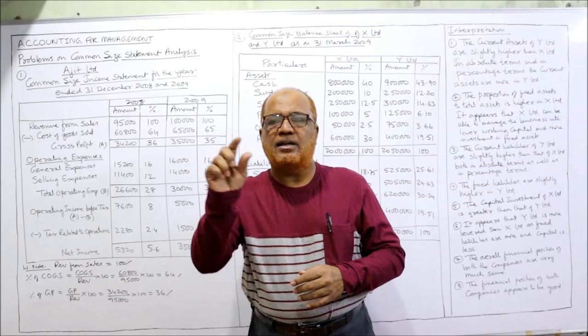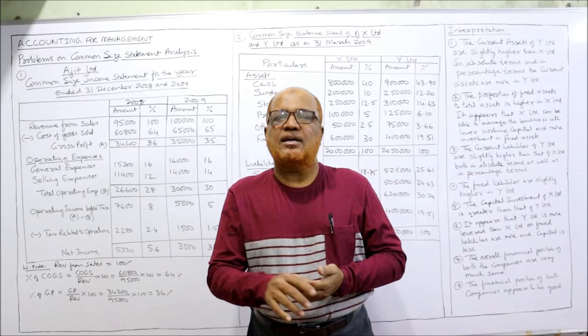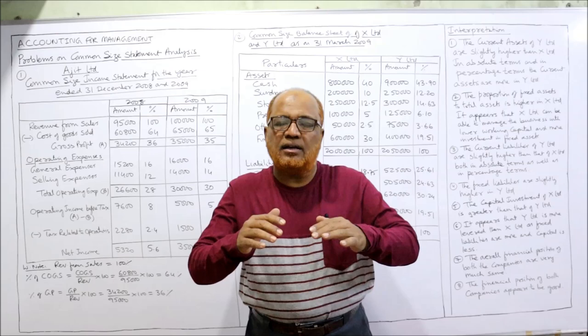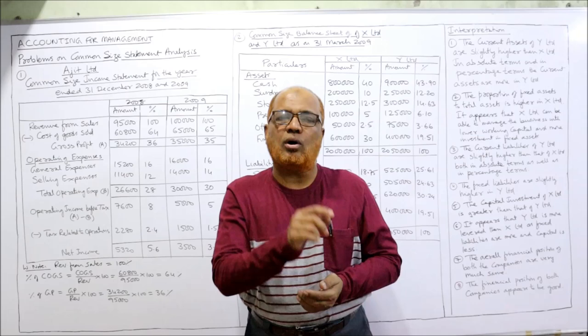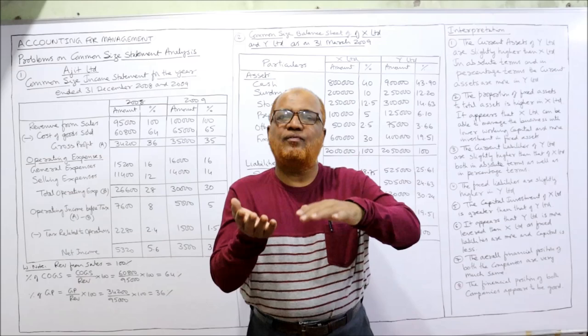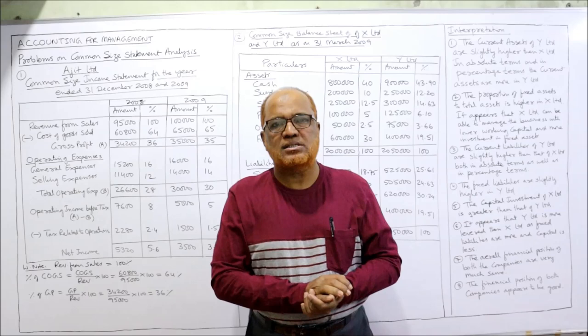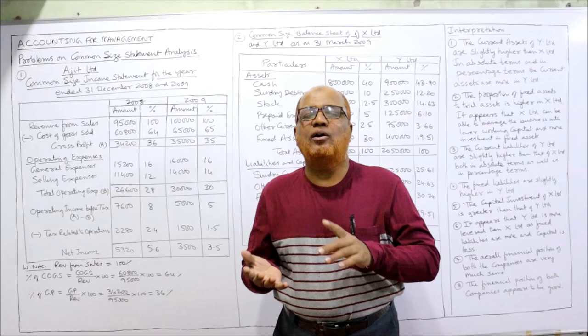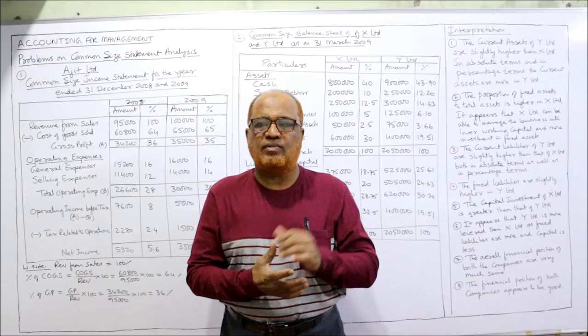In the income statement, the base is taken as total sales or total revenue. In the balance sheet, we take total assets as the base. We calculate the percentage of all other items on the basis of sales or total assets, converting absolute figures into percentages for all values in the financial statements. That is called a common size statement.